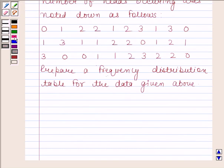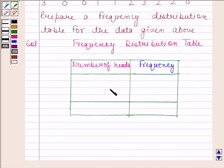Let us now begin with the solution. We have to prepare a frequency distribution table for the given data. Let us make a table now. We have made two columns: one for the number of heads and another for frequency.